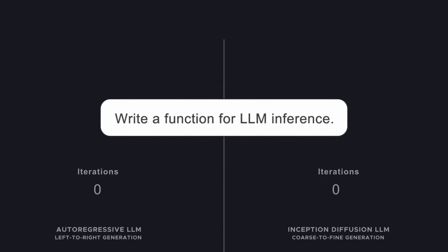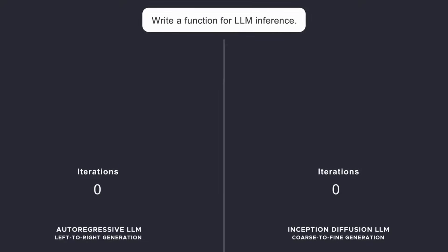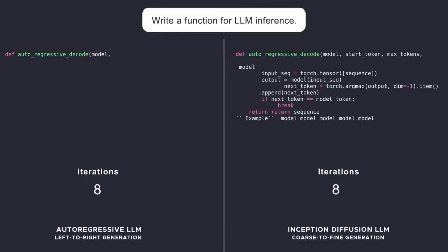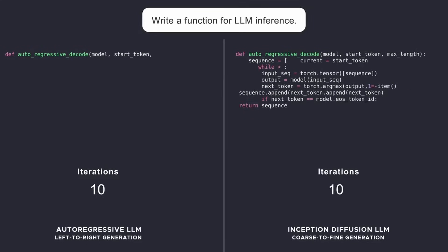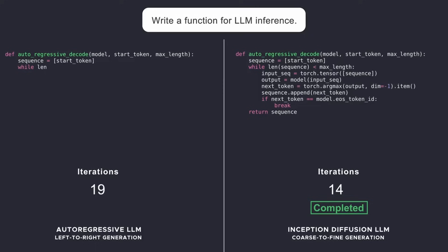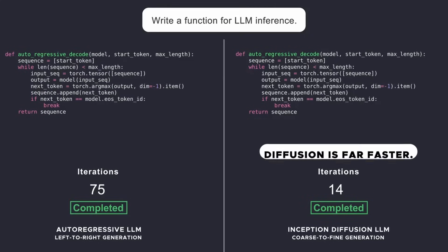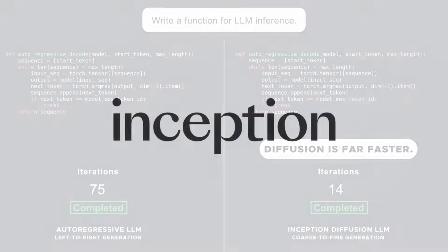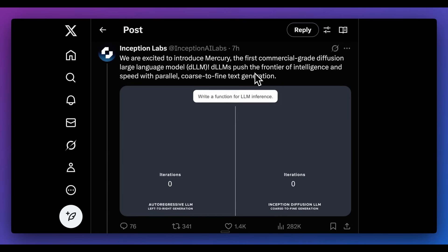Just today, Inception Labs introduced Mercury, which is the first commercial grade diffusion large language model. The traditional large language models that we're used to using are auto-regressive — they generate text sequentially. One of the drawbacks of that method is that the inference cost is higher and the latency is slower as a result.